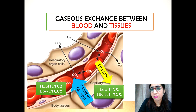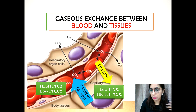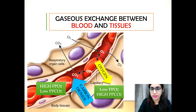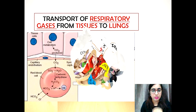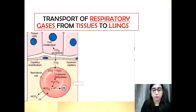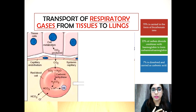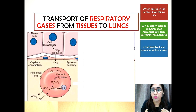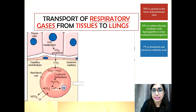This carbon dioxide is then transported back to the lungs to be eliminated through exhalation. Carbon dioxide is transported in three ways: 70% is carried in the form of bicarbonate ions, 23% combines with hemoglobin to form carbaminohemoglobin, and the remaining 7% is dissolved and carried as carbonic acid.